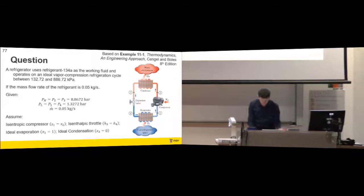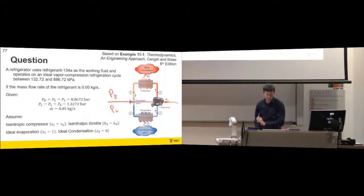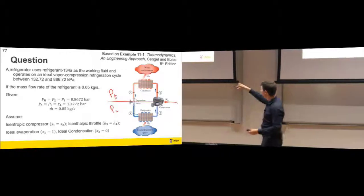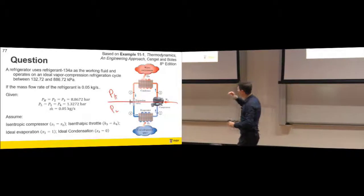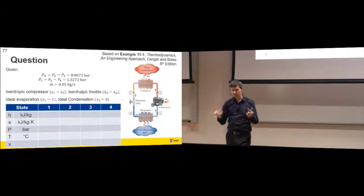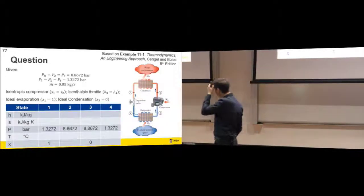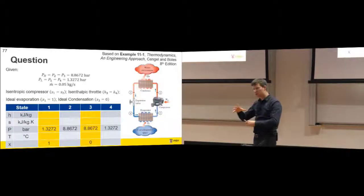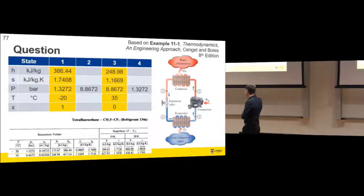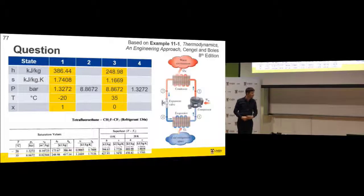We know that P1 and P4 are at the low pressure. Because we're told it's an ideal cycle, we assume isentropic compression, isenthalpic throttle, ideal evaporation, and ideal condensation. That gives us our quality values at two state points and our pressure at all four. We fill out a table. We've got our pressures and quality at two states, which lets us find the rest of the figures for state one and state three using the Rogers and Mayhew table. These pressures have been tuned to avoid interpolation - so 35 degrees C and minus 20 degrees C.